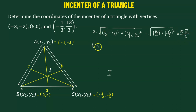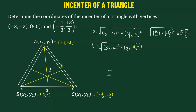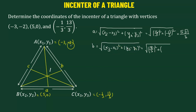Next, we find the value of b. We take the square root of x3 minus x1 squared plus y3 minus y1 squared. Here x3 is negative 1 third, and subtracting negative 3 gives negative 1 third plus 9, which is 8 over 3, squared. Then y3 minus y1 is 13 over 3 minus negative 2, which is 13 over 3 plus 2, giving 19 over 3, squared. Simplifying this gives 5 times square root of 17 over 3.